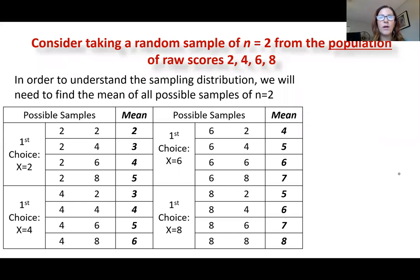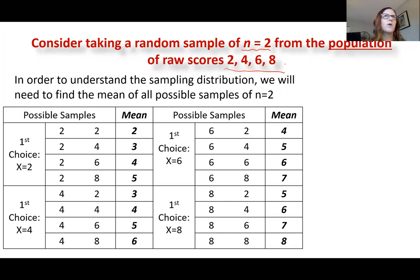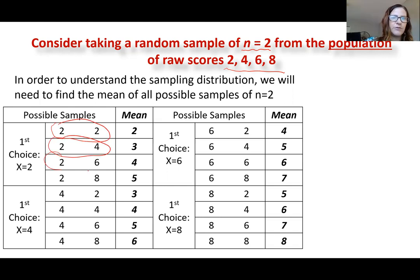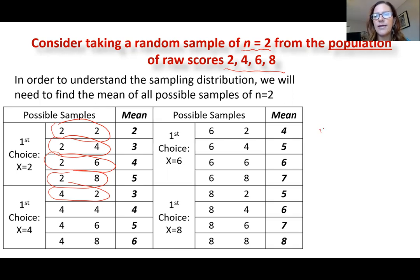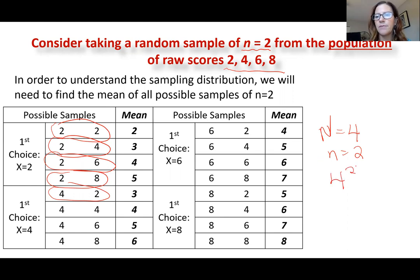Here's a numeric example. We're taking a sample of two from a population of raw scores: 2, 4, 6, and 8. We put all four in a hat. If the first choice is 2, the samples are: 2 and 2, 2 and 4, 2 and 6, 2 and 8. Then with 4 as first choice, we get 4 and 2, 4 and 4, 4 and 6, and 4 and 8. That's N=4 to the 2nd power = 16 total samples.